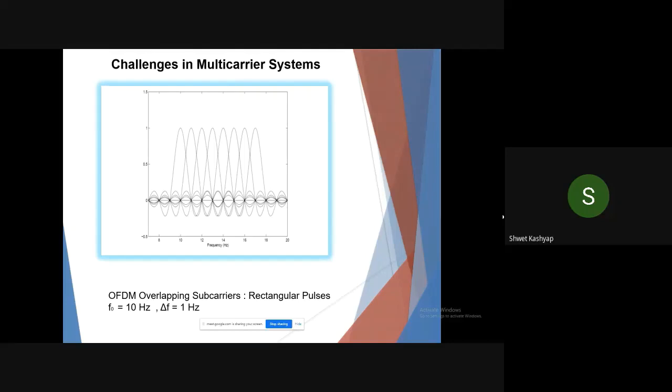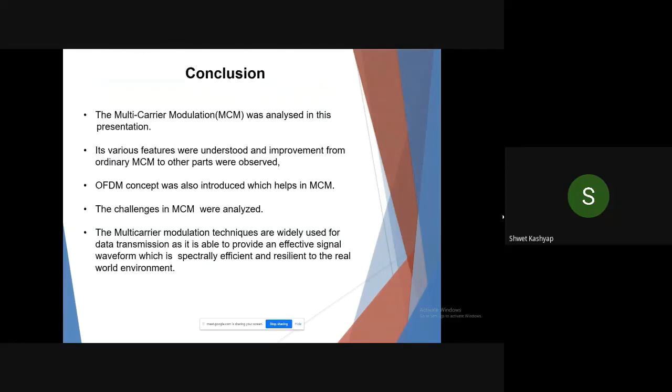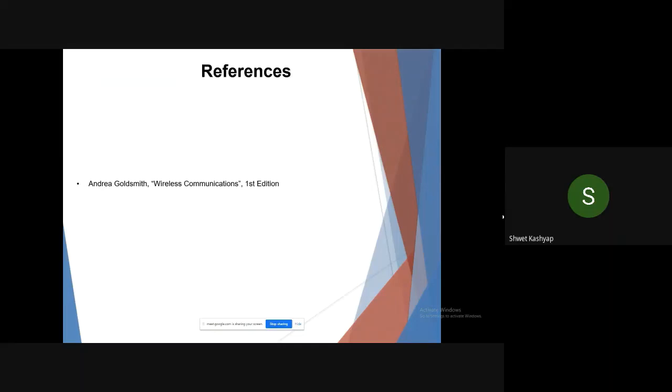Finally, we conclude: MCM was analyzed and we saw various features and how improvement was made from ordinary MCM. Then we saw the OFDM concept was introduced, the cyclic prefix was added and how to recover it, and the challenges were discussed. Multi-carrier modulation techniques are widely used for data transmission and are able to provide an effective signal waveform which is efficient and resilient to the real-world environment. I have taken all the material from Wireless Communications by Andrea Goldsmith. Thank you.